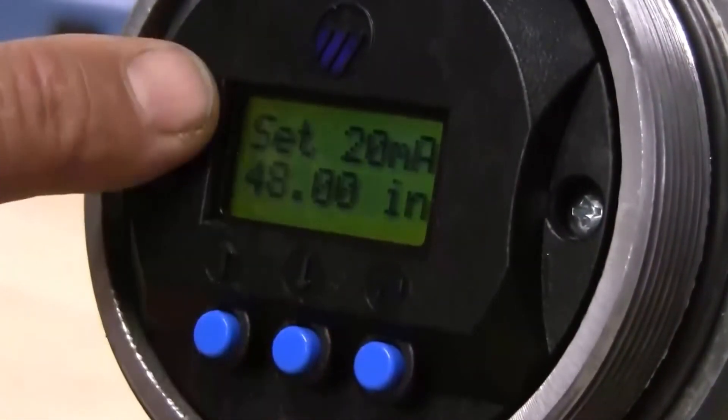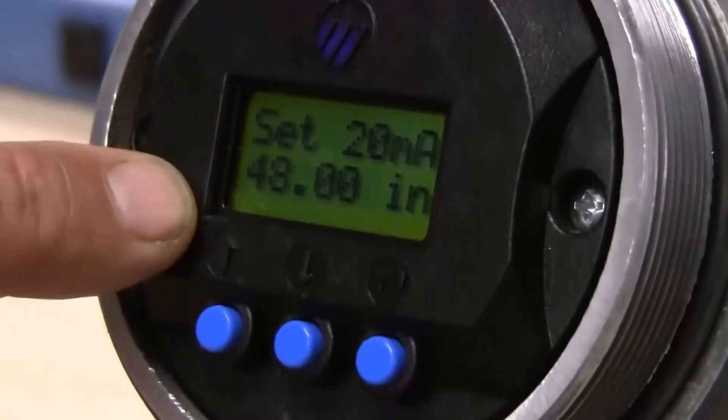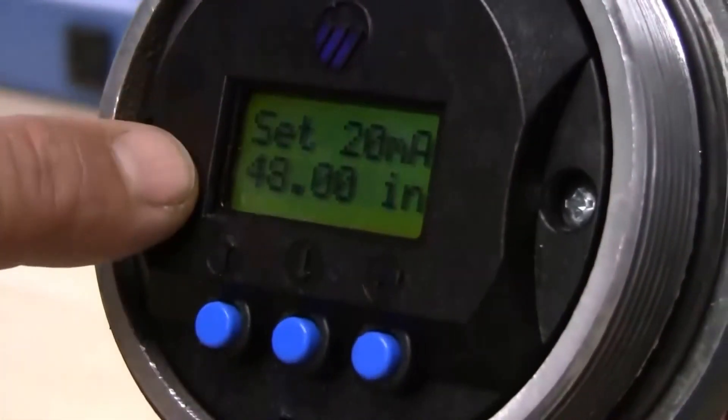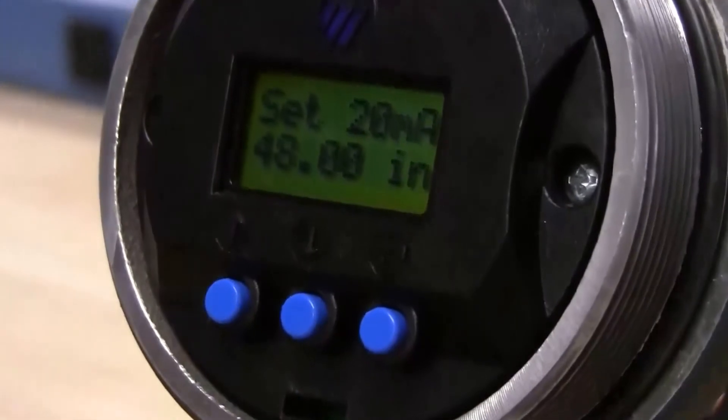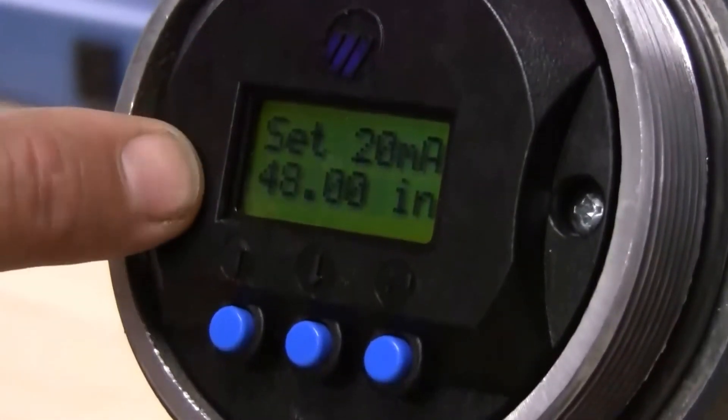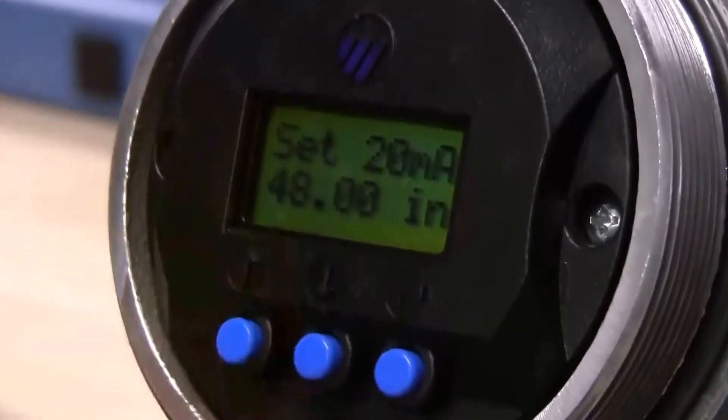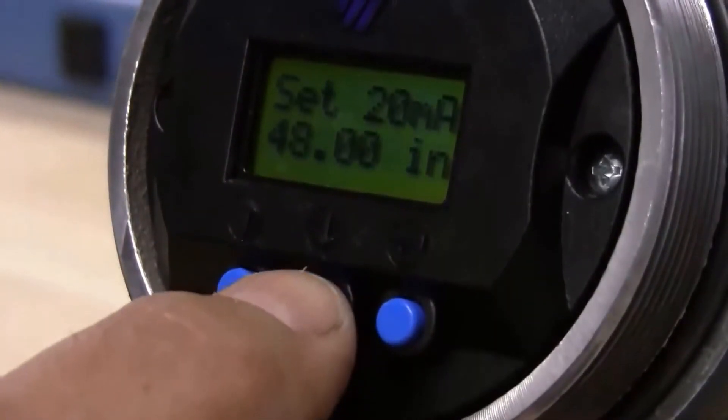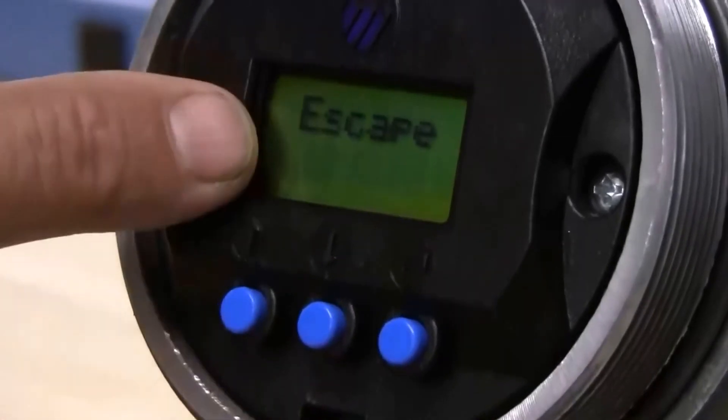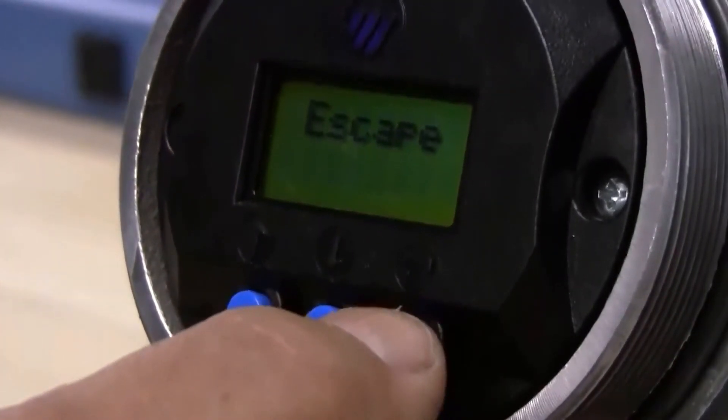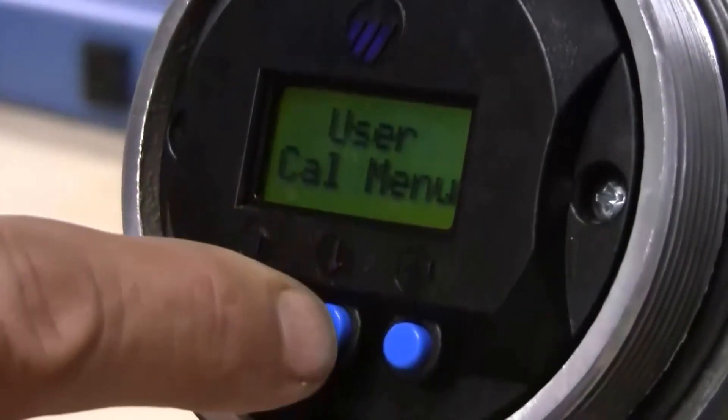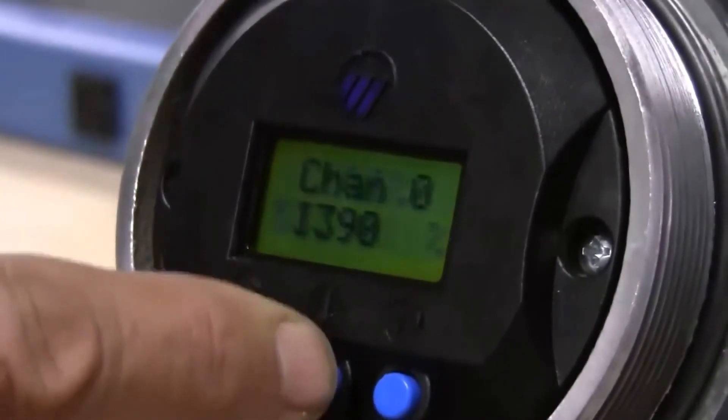And then our set 20, we want 20 milliamps to read out if this was a 48 inch displacer at the top of the displacer. So when the device reads 48 inches, we want it to output 20 milliamps. So we will leave that there. And down arrow and when you see escape, you can just push enter.